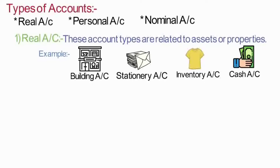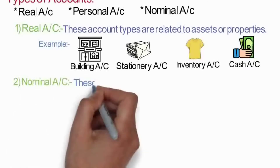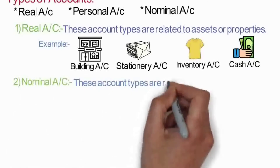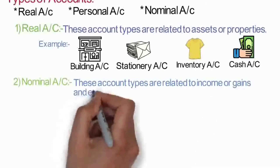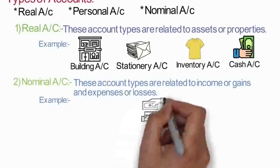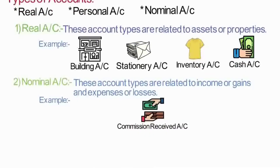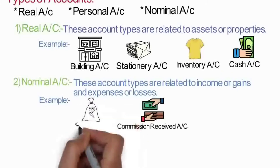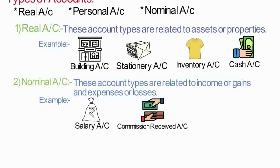What are nominal accounts? These account types are related to income or gains and expenses or losses. For example, commission received is a gain, so it is a nominal account. Salary — if we pay it, it is an expense for us, and if we receive it, it is an income for us. So whether salary paid or salary received, it will always be a nominal account.